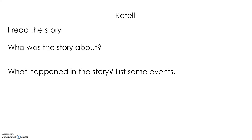In a retelling, it's always good to start with the title of the book — I read the story. And then we always talk about the characters: who was the story about? And then to get the reader really interested and want to read this book with you, it's good to say what happened in the story and list some events.